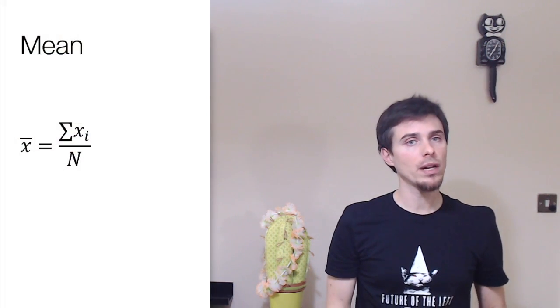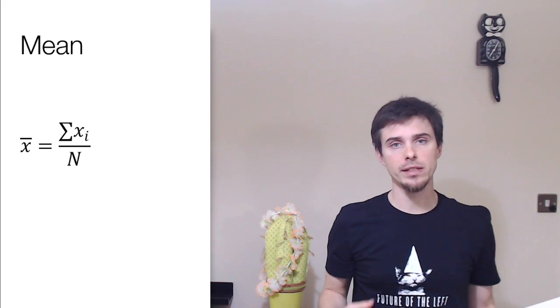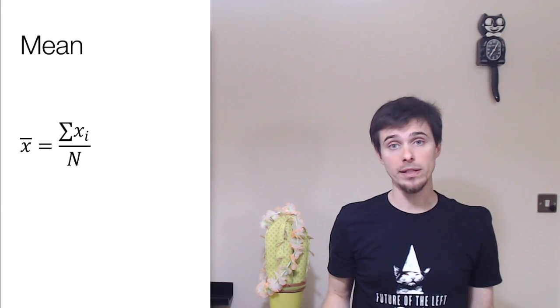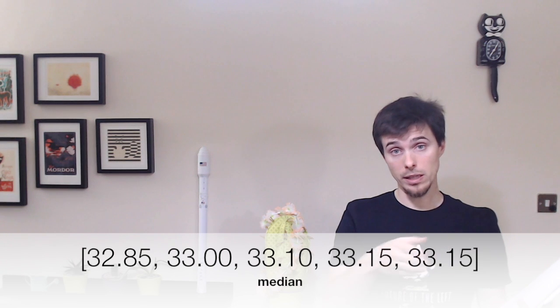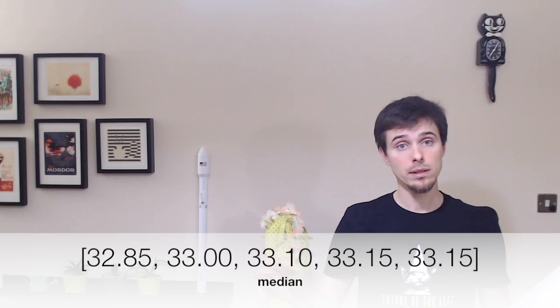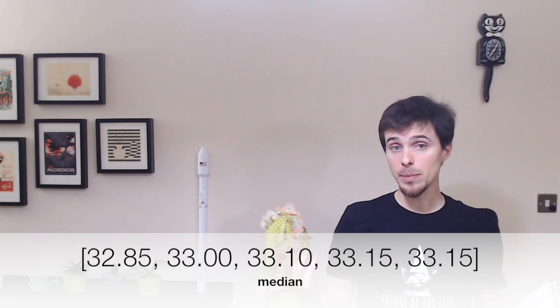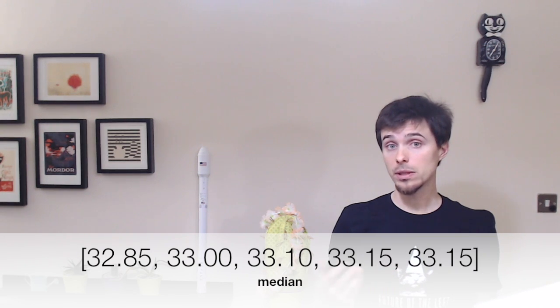The mean is the most probable value in the population, and it's defined as the sum of all events divided by the sample size n. For our sample, it is equal to 33.05. The median is the middle value of the sample when arranged in ascending order, and in our case the median is 33.10.